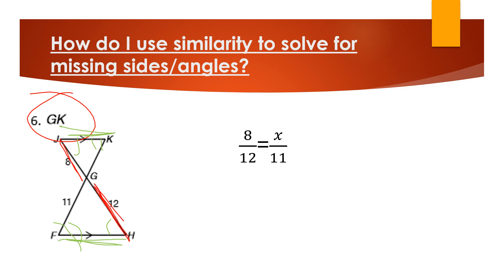So as it's highlighted in red, you can see that it's going to be 8 over 12 because those sides are proportional, over what we're trying to find, GK, which is x over 11. And so again, cross multiply and just solve for x. And there you go.